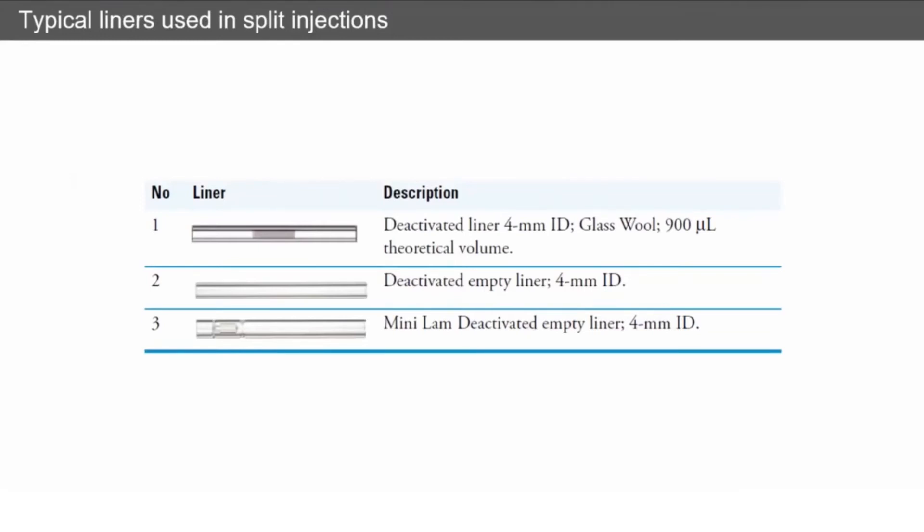There are some various other liners out there like mini lamb liners which allow us, when we're dealing with really high boiling point analytes or really dirty samples, to trap some of that matrix within the inlet and not let it get onto our column.